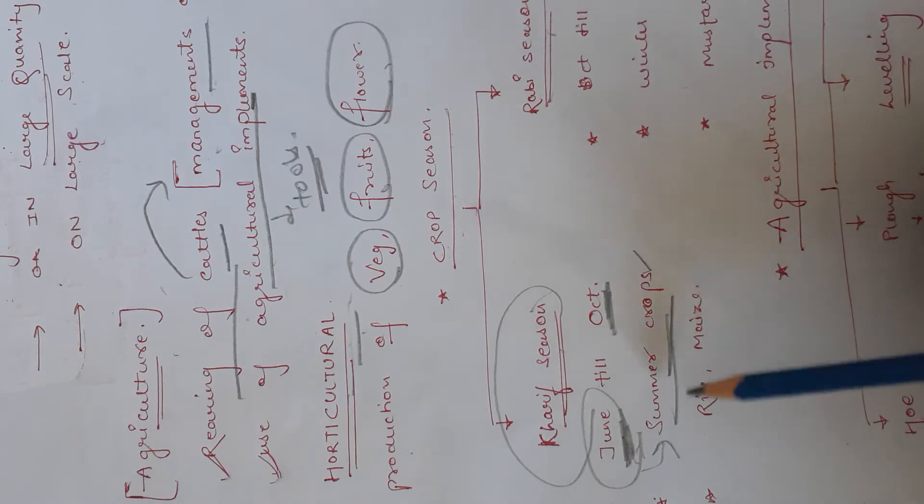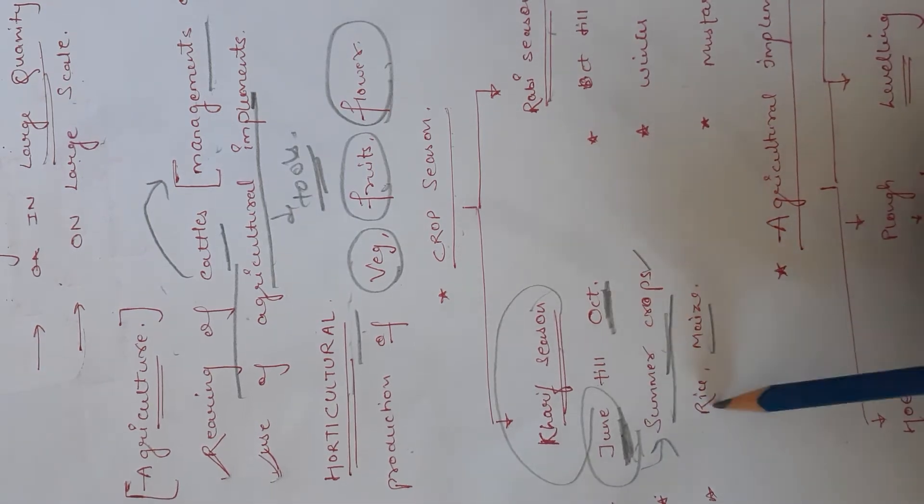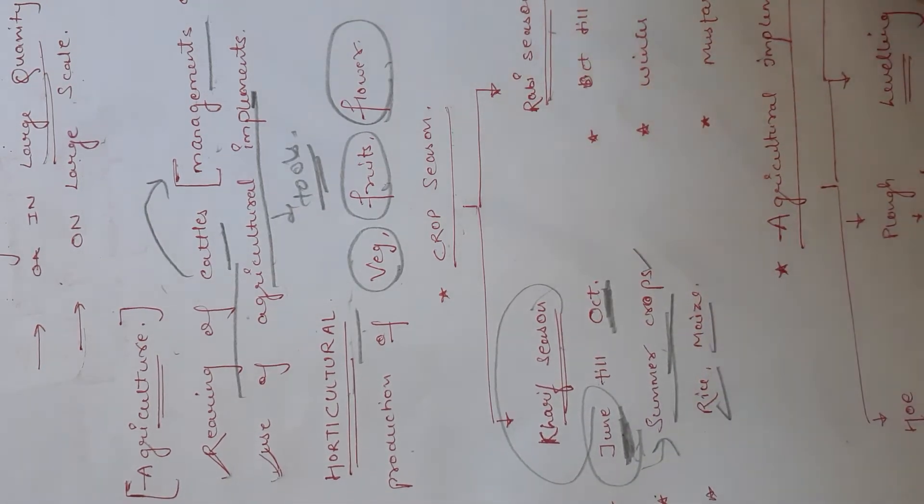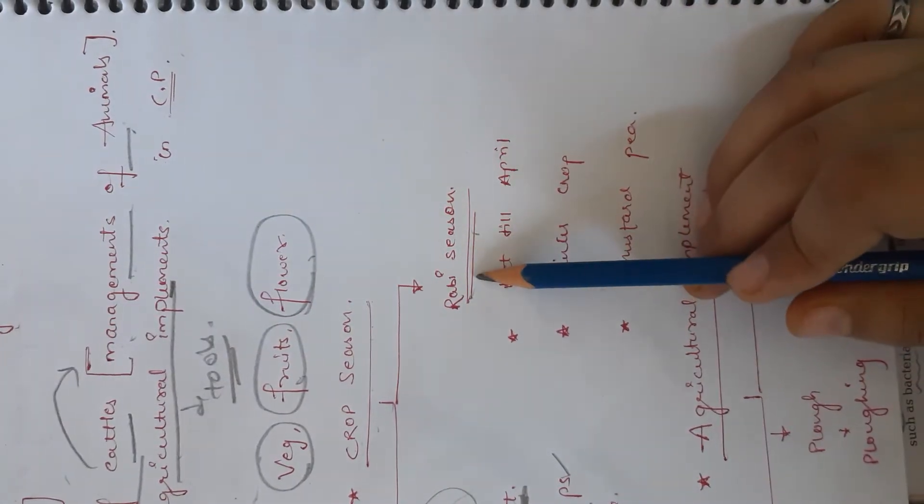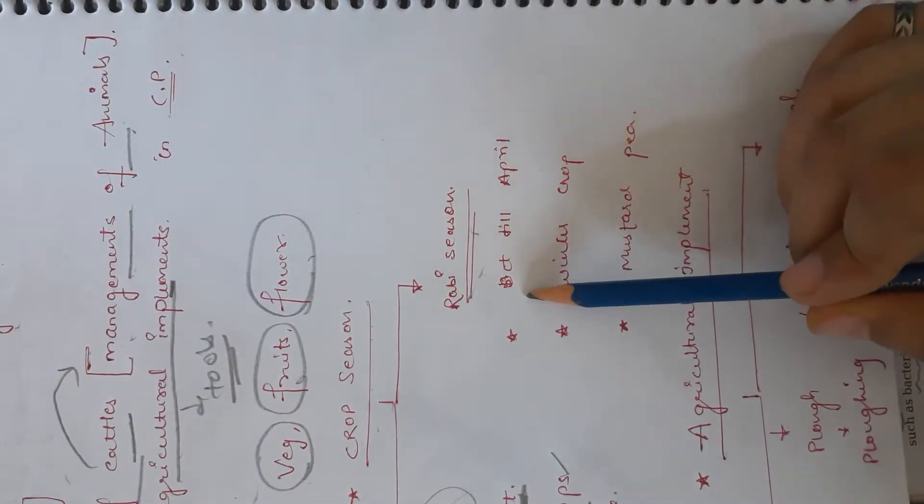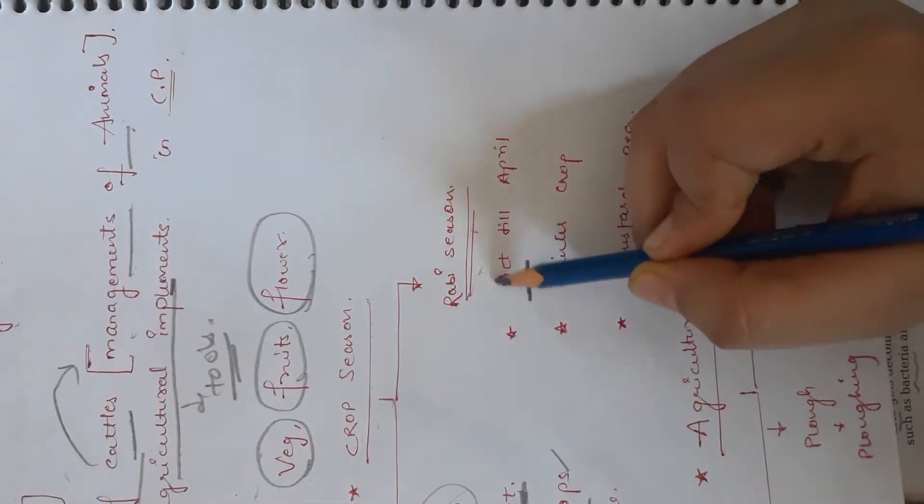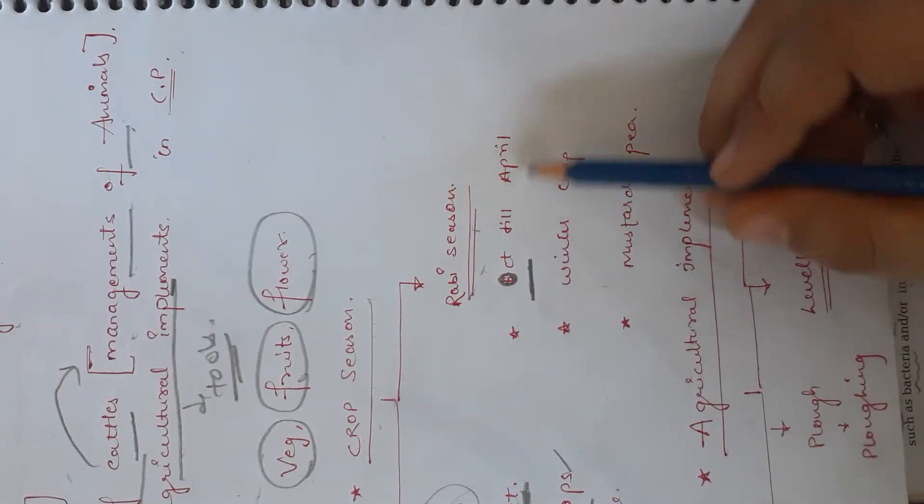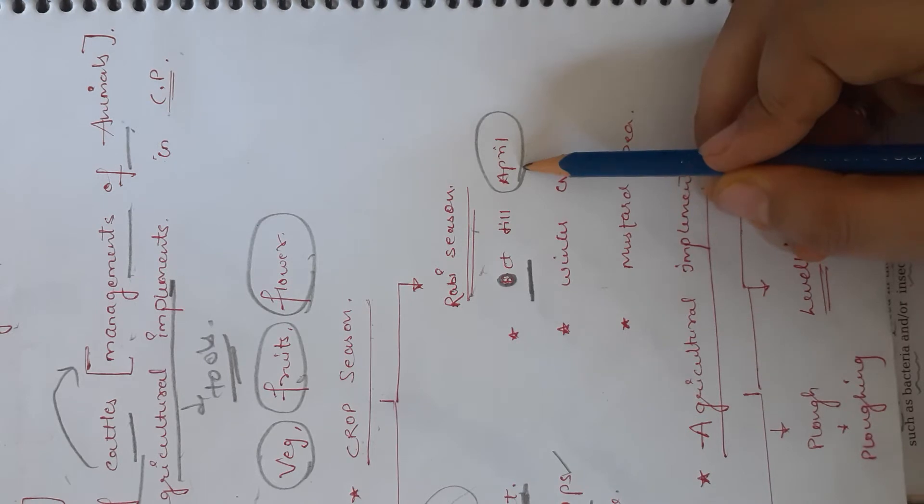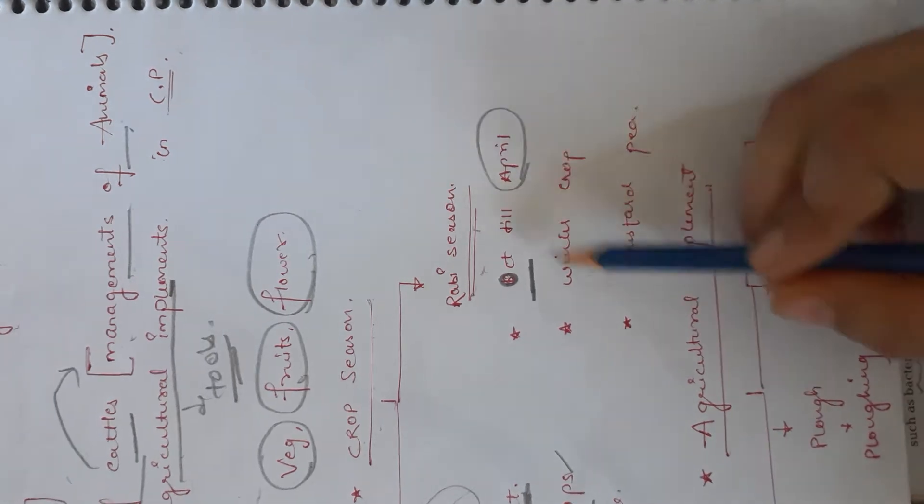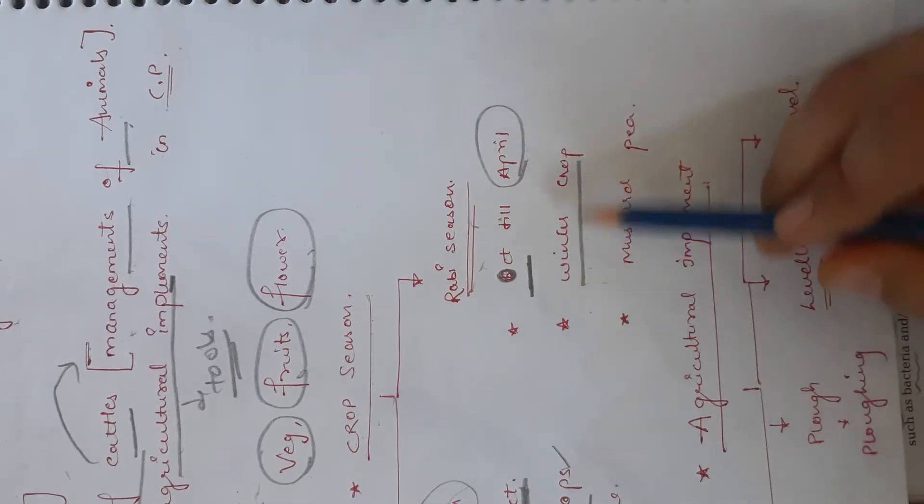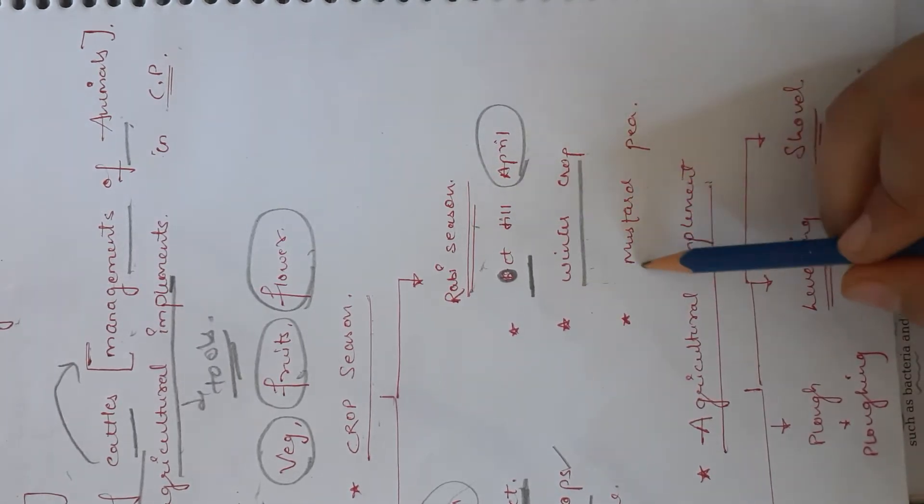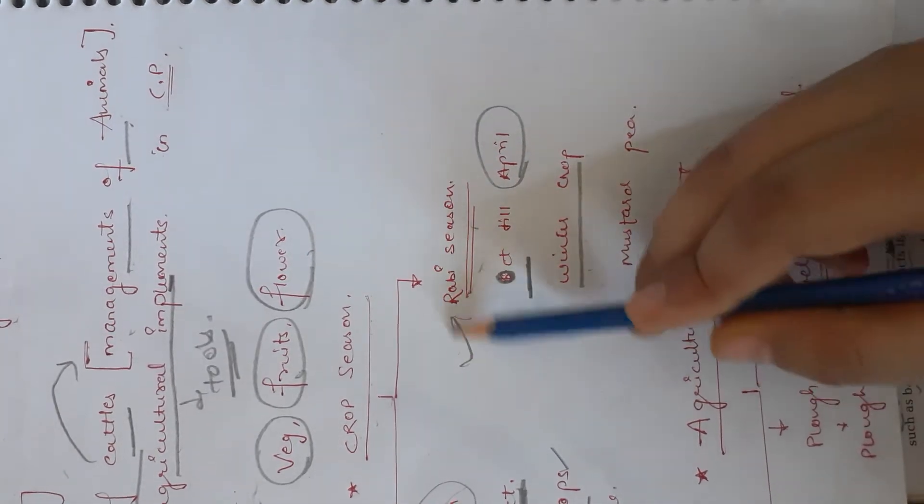Which crops are coming in summer like maize, rice, etc. Next we discuss Rabi season crops. Rabi season which is cultivated in October and harvested in April. These are winter crops.